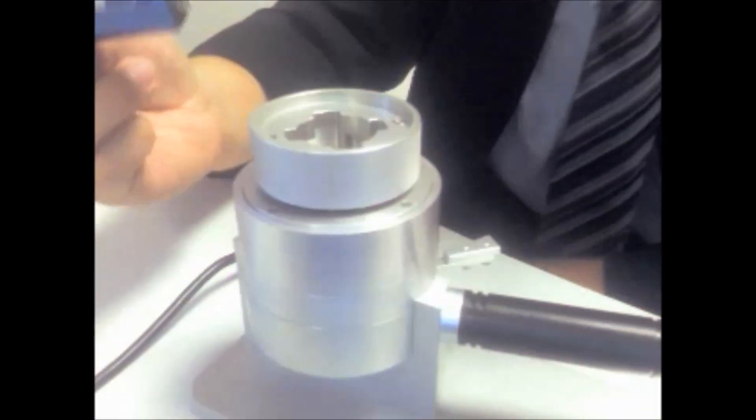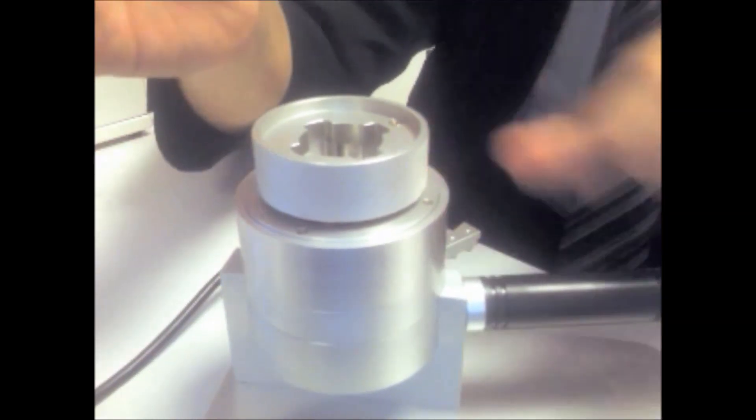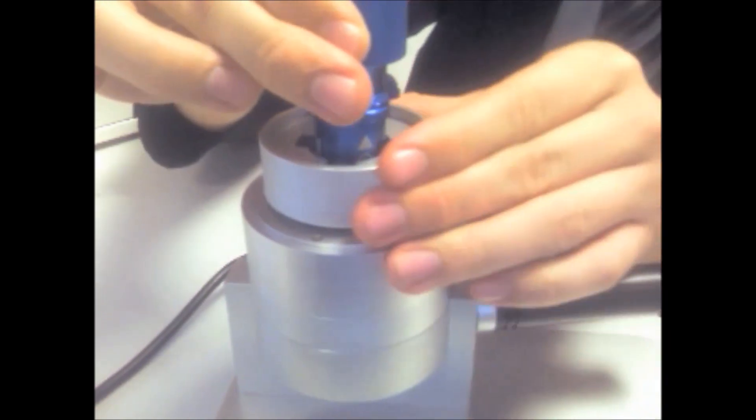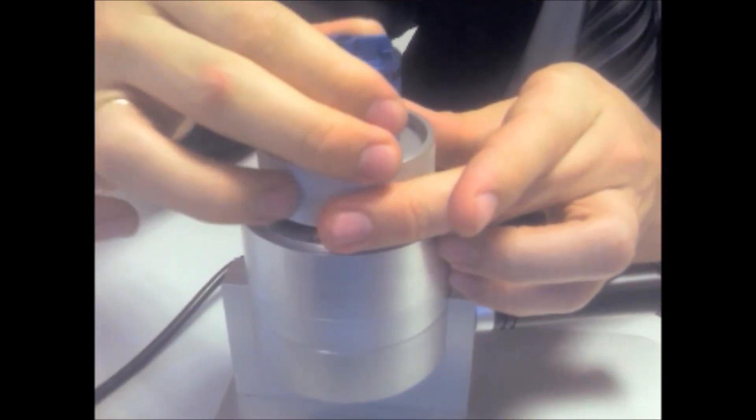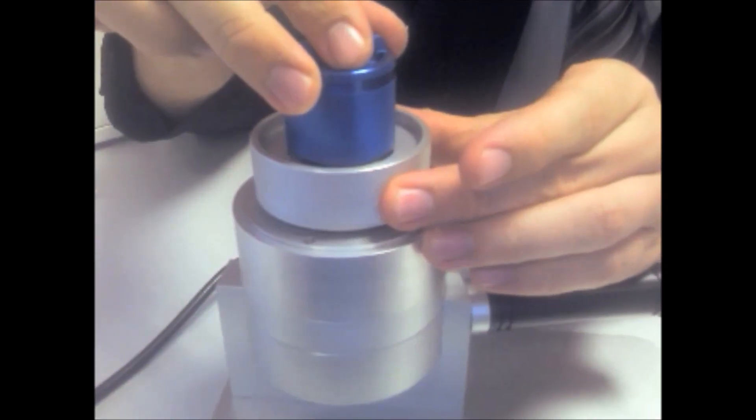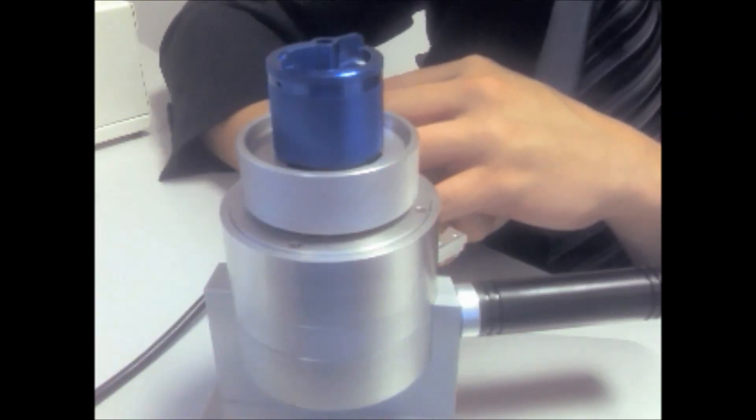The next step is to insert the blue loader into the capsule opener. When you insert this, you need to insert it in alignment with the prefabricated holes and twist in an anti-clockwise motion to lock the blue loader in place.